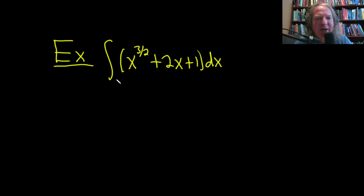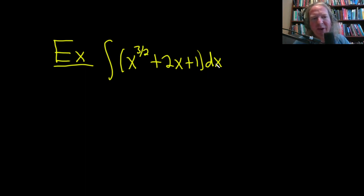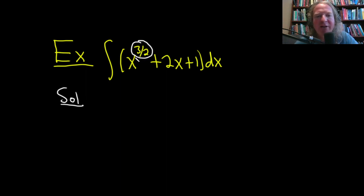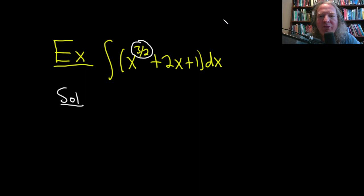Let's do this example: we have the integral of x to the 3/2 plus 2x plus 1. The dx tells us the variable of integration. We can jump right in and use the formulas — specifically the power rule. We have x to the 3/2, and the power rule says that whenever you have x to a power (as long as that power is not negative 1) you add 1 to the exponent.